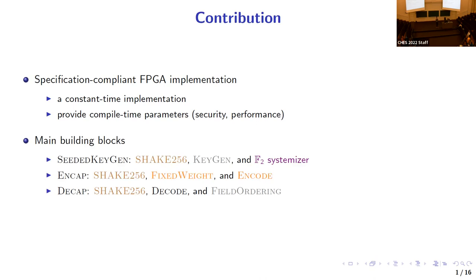Classic McEliece consists of three parts: key generation, encapsulation, and decapsulation. The main building blocks are: seeded keygen (consisting of SHAKE256, keygen, and F2 systemizer), encapsulation (SHAKE256, fixed weight, and encode), and decapsulation (SHAKE, decode, and filtering). By using some core functions from prior work (WSN16 and WSN18), they designed and implemented the other highway modules for all three primitives.